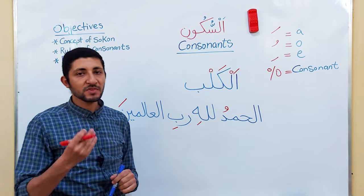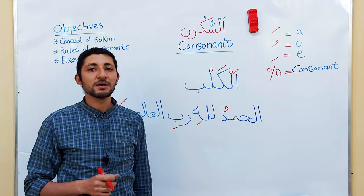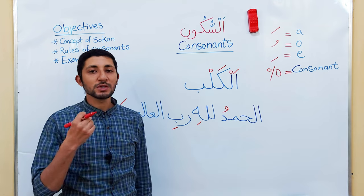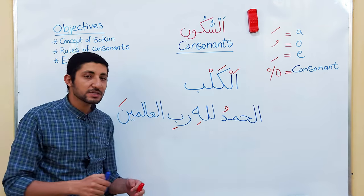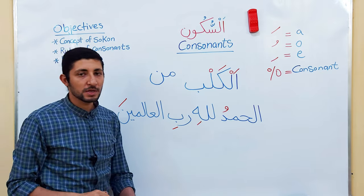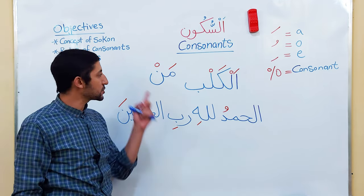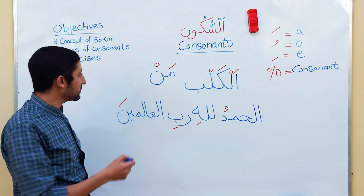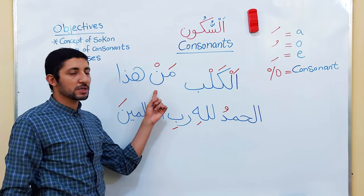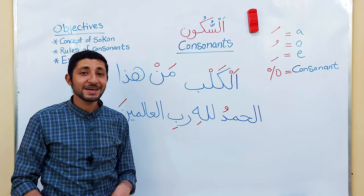One final point about consonants: sometimes the final letter of a word is originally labeled with Sukoon — it is originally consonant. In this case, whether you stop at this letter or continue reading, it will be consonant in both situations. For example, the interrogative noun 'man' — meaning 'who' — the first letter is labeled with Fathah and the second is originally consonant. So whether I say 'man' and stop, or continue — 'man hadha' — it remains consonant either way because it is originally consonant.